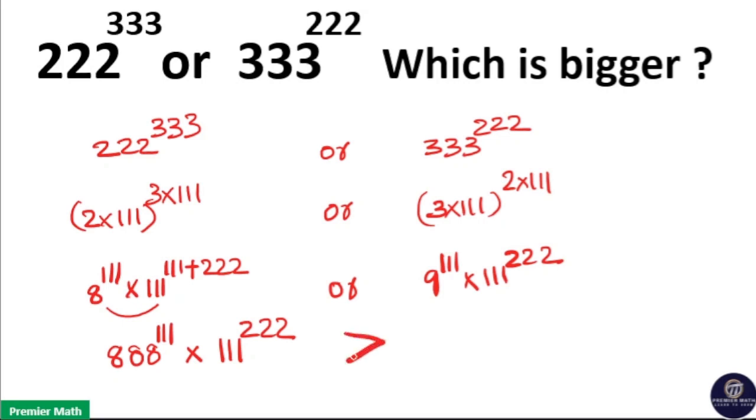So this is clearly greater than 9 raised to 111 into 111 raised to 222 because both have 111 as common factor and you can see 888 raised to 111 is clearly greater than 9 raised to 111. So this one is greater, which is bigger.